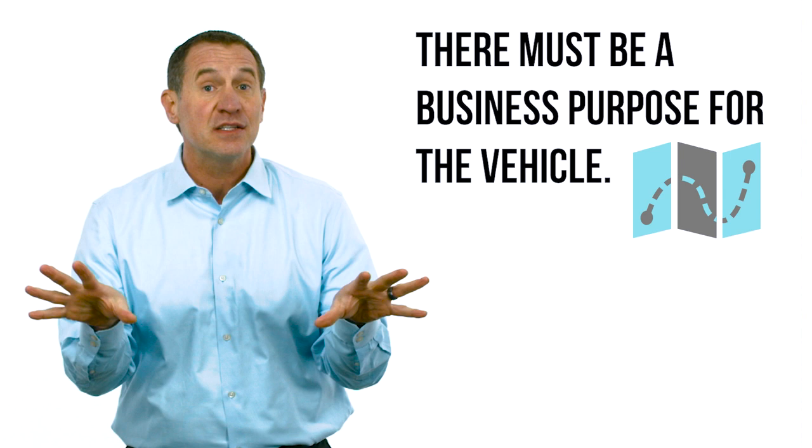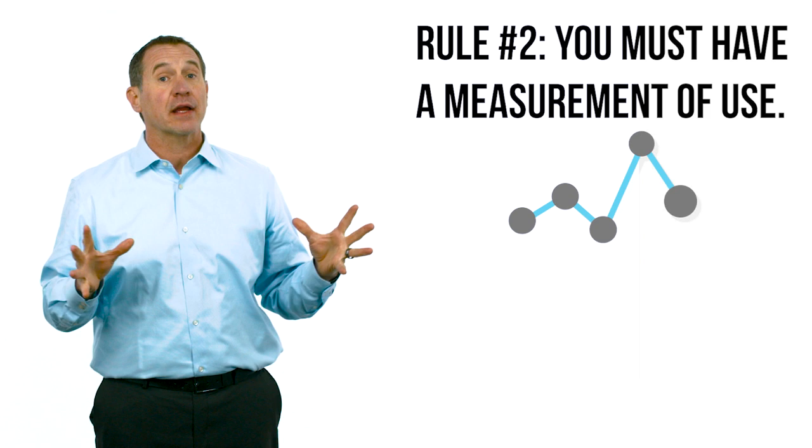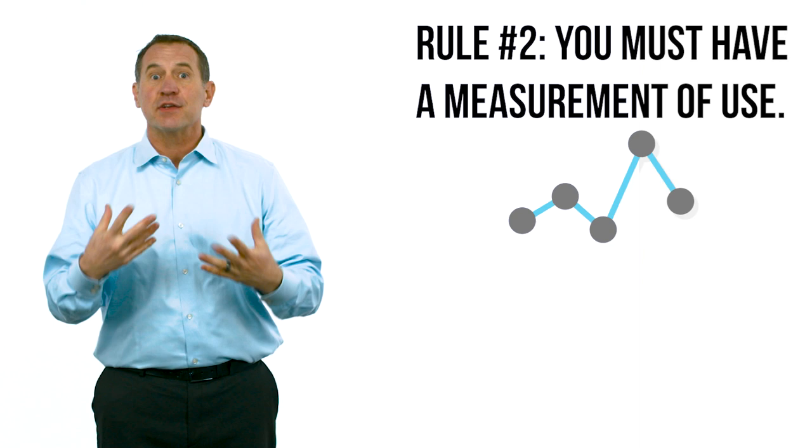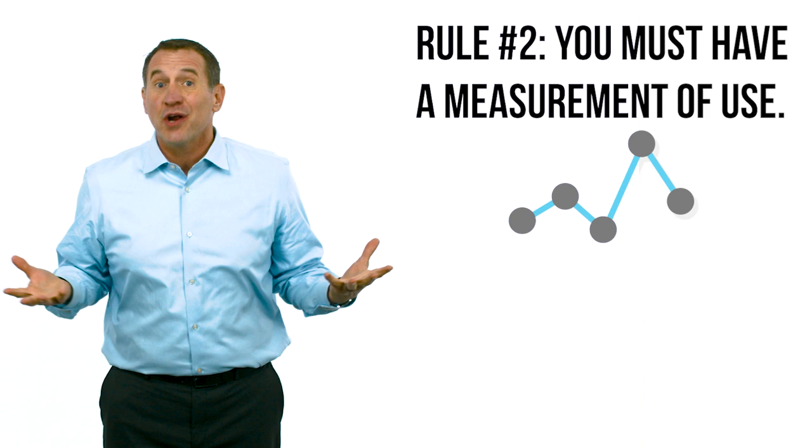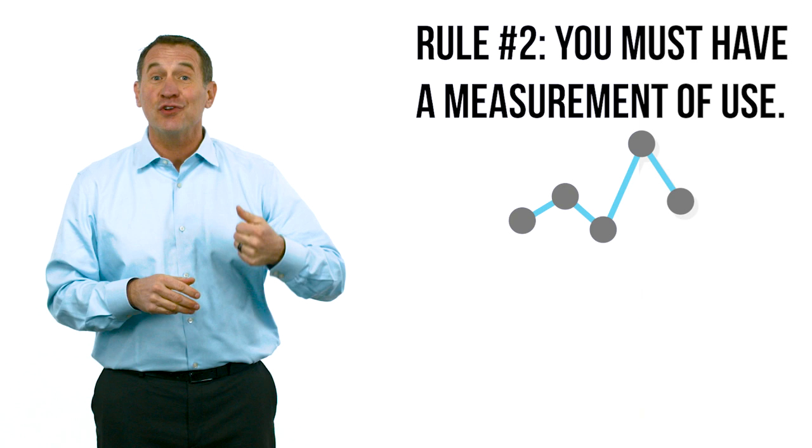Number two: you've got to track the activity or the mileage of your vehicle, even if you're gonna go actual, writing off repairs and maintenance and fuel. You may say I don't have to do mileage. Well, the IRS still wants to know what you're driving your car for, so you're gonna want to do your best to track that mileage. What's personal? When did I go to the grocery store or the movies? What was commuting to maybe my day job or back and forth to the office?